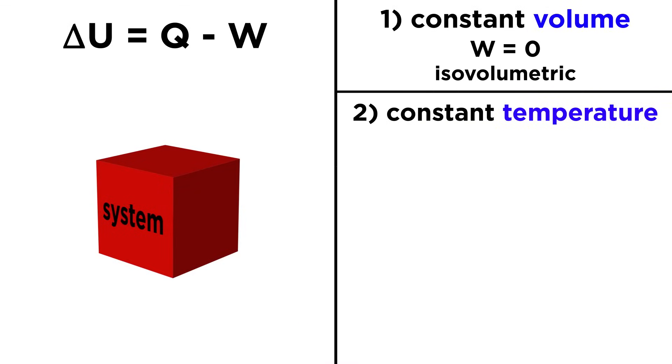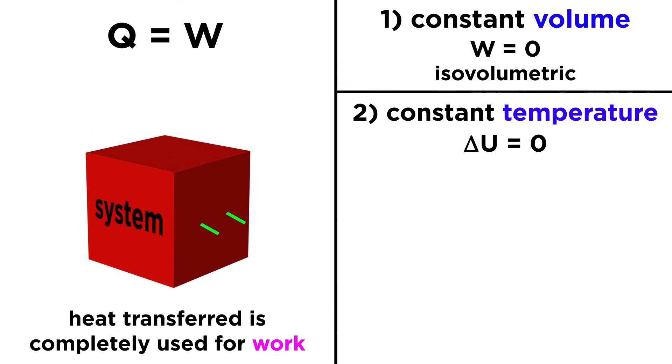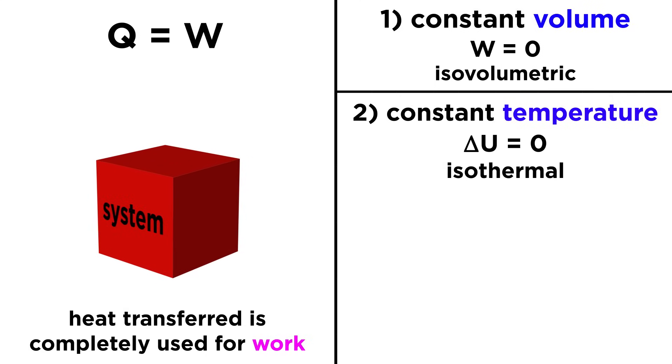If there is no change in the temperature of the system, there cannot have been any change in the internal energy of the system, since these two values are proportional. Delta U will be zero, which makes Q equal to W. This means that any heat transferred into the system is used by the system to do work, rather than increasing the internal energy of a system. This is called an isothermal process, meaning no change in temperature.